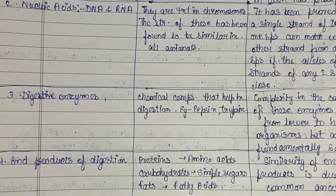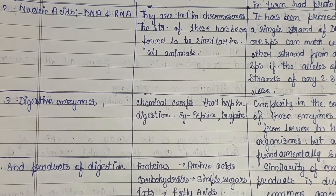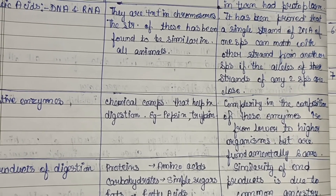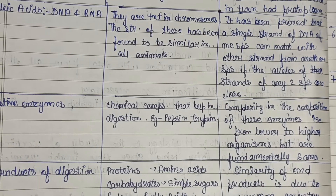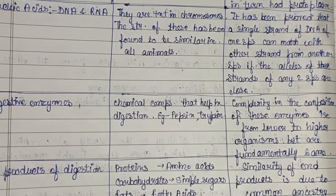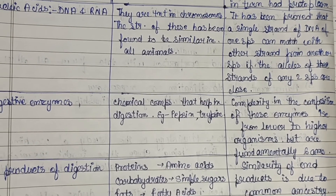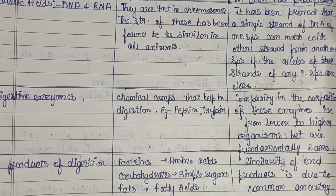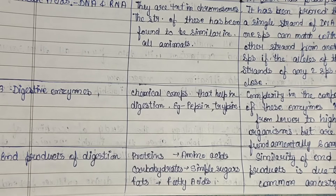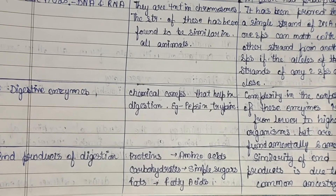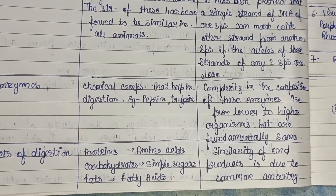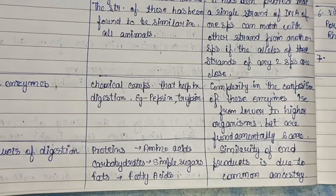Digestive enzymes are chemical compounds that help in digestion — for example, pepsin and trypsin. Their evolutionary significance is that the complexity in the composition of these enzymes increases from lower to higher organisms, but they are fundamentally the same across all living organisms. The end products of digestion: proteins are converted into amino acids, carbohydrates into simple sugars, and fats into fatty acids. The similarity of these end products is also evidence of common ancestry.